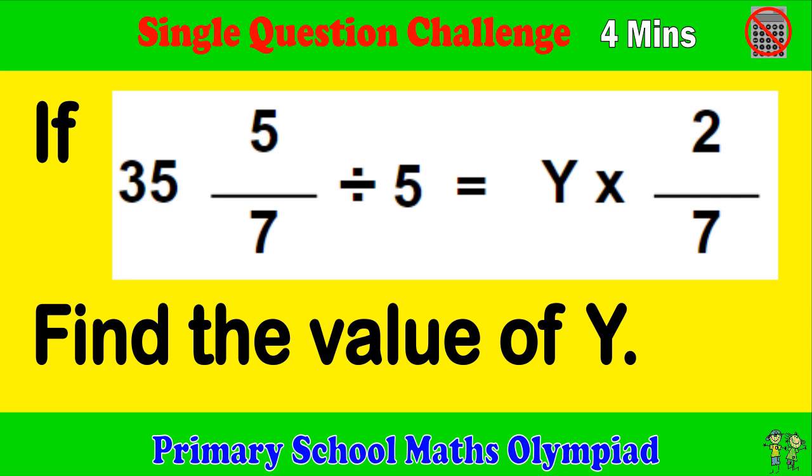If the equation 35 and 5 over 7 divided by 5 is equal to y times 2 over 7, find the value of y.